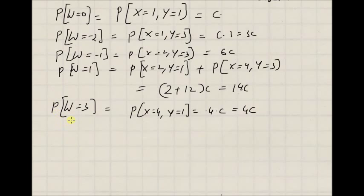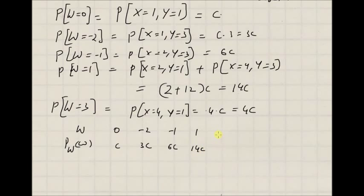Now that we have the probability mass function of w: for w equal to 0 we have c, for w equal to minus 2 we have 3c, for w equal to minus 1 we have 6c, for w equal to 1 we have 14c, and finally for w equal to 3 we have 4c. So we have the complete probability mass function of w.